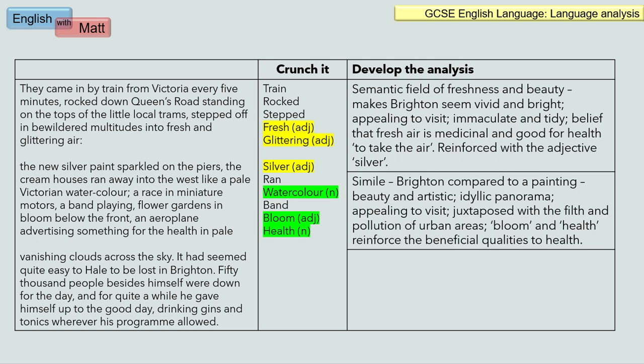As we go into the second paragraph, we've got these three colours. This is a simile, of course — Brighton is compared to a Victorian watercolour, suggesting it's quite artistic and beautiful. Again, it's quite an idyllic panorama and very appealing to visit. But we've also got 'bloom' and 'health' — an adjective and a noun — suggesting that there's something beneficial here, something clean, something that isn't filthy. 'Bloom' reminds me of flowers, which have connotations of nature, not the polluted city areas that many of these holidaymakers are coming from. And 'health' again reinforces that previous point: being in Brighton on this day almost has medicinal qualities, which is why so many people have come down to the south coast.